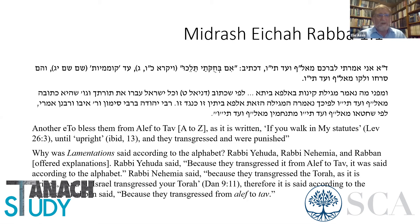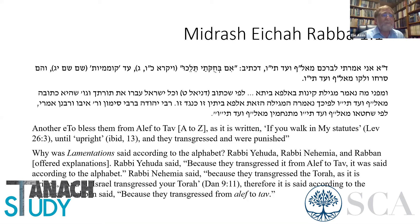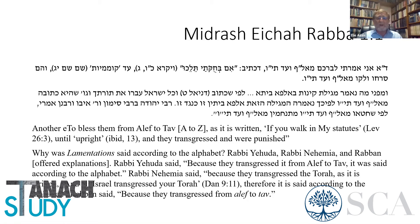However, the same criticism we had on the first opinion also applies to this one. If we have the idea of completeness of sin, completeness of punishment, and completeness of nechama, then we should have the same form also in chapter 5. These explanations do not explain the uniqueness of chapter 5, or the uniqueness of chapter 3 with its triple acrostic.